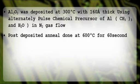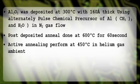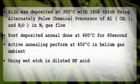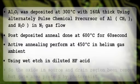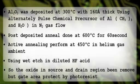Post-deposition anneal is done at 600 degrees Celsius for 60 seconds. Active annealing is performed at 450 degrees Celsius in helium gas ambient. Wet etching in diluted hydrofluoric acid removes the oxide in the source and drain regions, while the gate area is protected by photoresist.